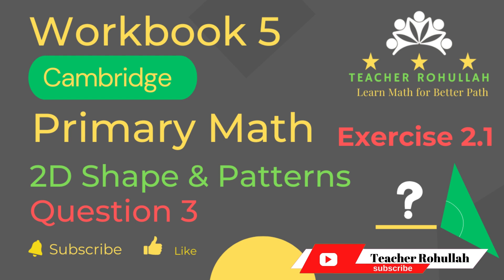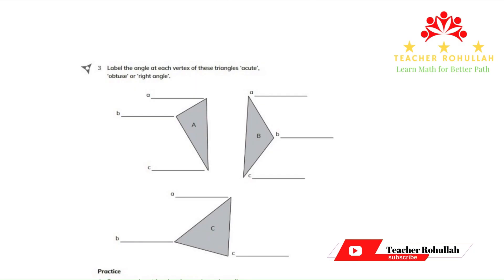Let's now move to the question and solve it. In question number three, it is asking us to label the angle of each vertex of these triangles as acute, obtuse, and right angle.